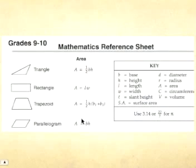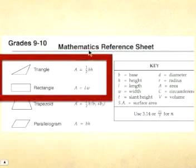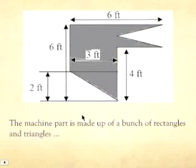Our mathematics reference sheet for FCAT helps us find the area for triangles and the area for rectangles. Spelled out for us right there. Okay, so back to our figure. It's made up of a bunch of rectangles and triangles.